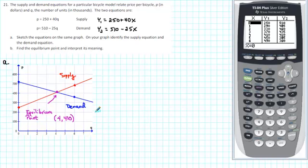How do we interpret this? What it's telling us is that if the price of the bicycles is set at $400, then the manufacturer is willing to supply 4,000 bicycles and the consumers are willing to purchase 4,000 bicycles. So if the manufacturer makes 4,000 bicycles and sells them for 400, they'll be able to sell all the bicycles with none left over.